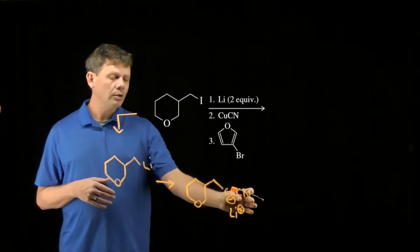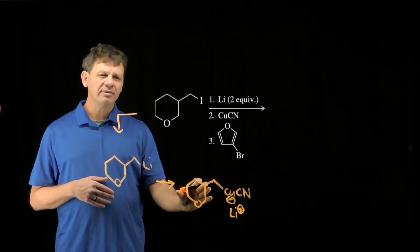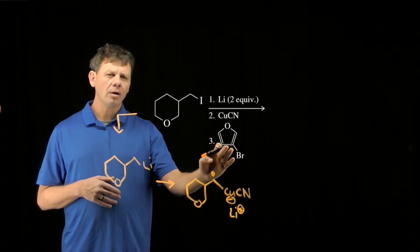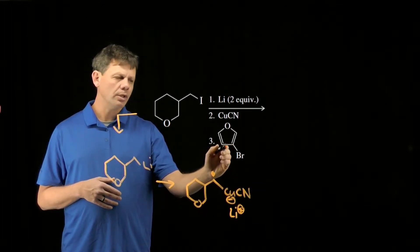Now as I said earlier the cyano group won't transfer. Only this alkyl group will. Now we're going to make a new bond between this carbon here and the carbon bearing the bromide shown here.